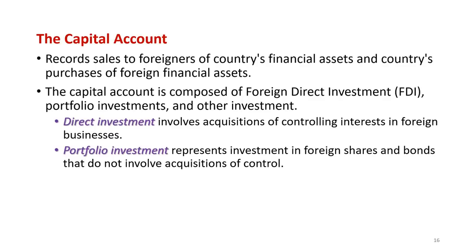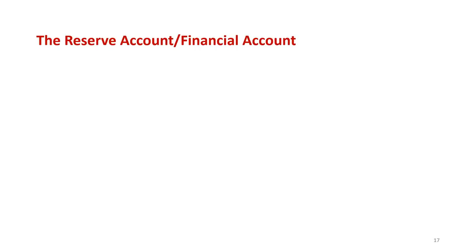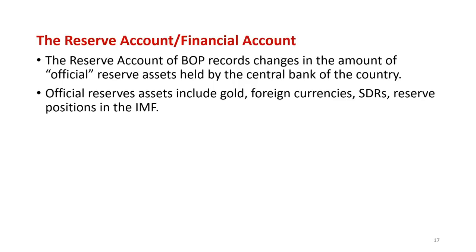The second account is the capital account, which records sales to foreigners of a country's financial assets and the purchase of foreign financial assets by residents of a country. The capital account is composed of foreign direct investment, portfolio investment, and other investments. Direct investment involves acquisition of controlling interests in foreign businesses. Portfolio investment represents investment in foreign shares and bonds that do not involve acquisition of control.